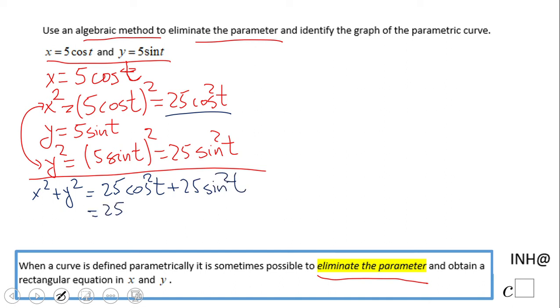We can factor out the 25, and we have here something that we really like. We have cosine squared plus sine squared, which is a famous trig identity if you remember. That equals 1.